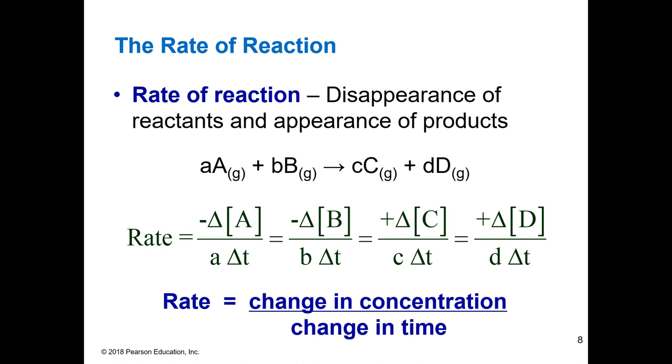So we said it's the disappearance of the reactants and the appearance of the products. So if we're looking at the rate in terms of the reactants, we're going to have a negative delta, negative change of the concentration of A per change in time. Or B, if it's the product, it's going to be the increase of that product in concentration over time, the change in time.